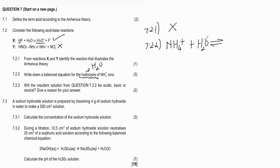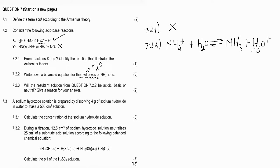The NH₄⁺ will act as an acid and water will act as a base. The NH₄⁺ donates its proton and is left as NH₃. Water accepts the proton to become H₃O⁺. Let's check if it's balanced: one nitrogen and one nitrogen; four plus two = six hydrogens, and three plus three = six — balanced; one oxygen and one oxygen — balanced. It is balanced.